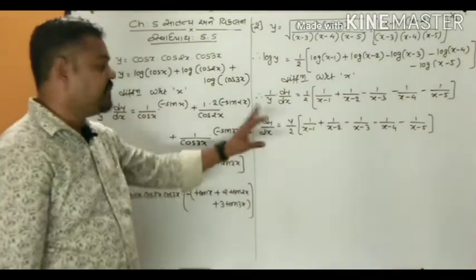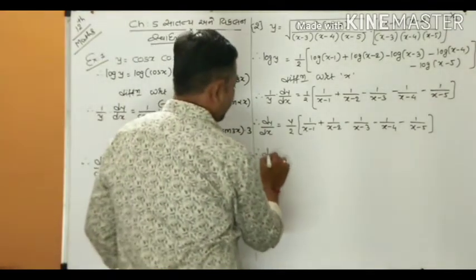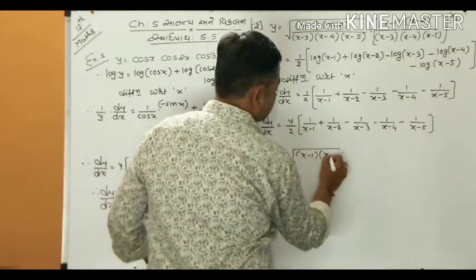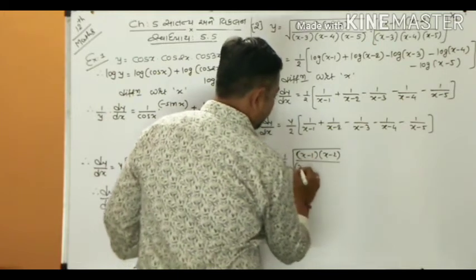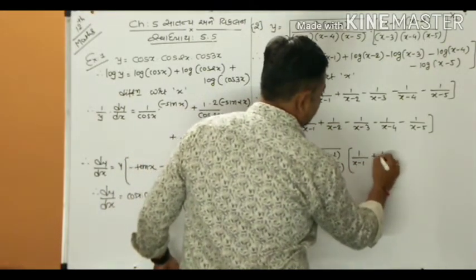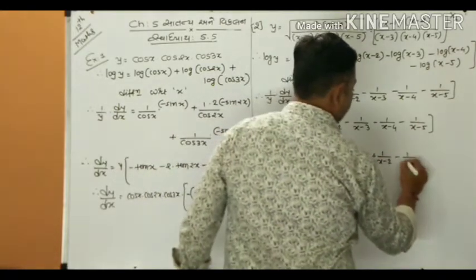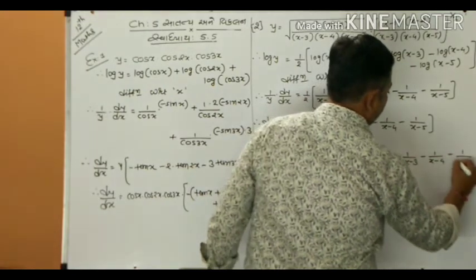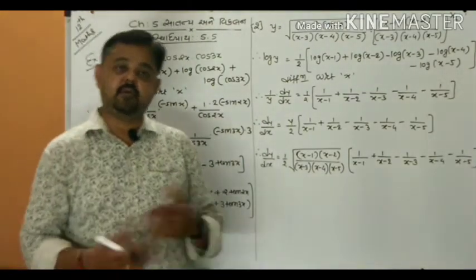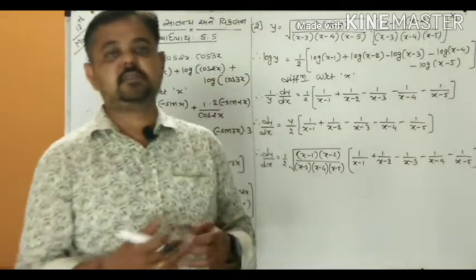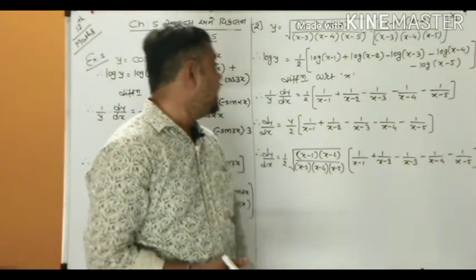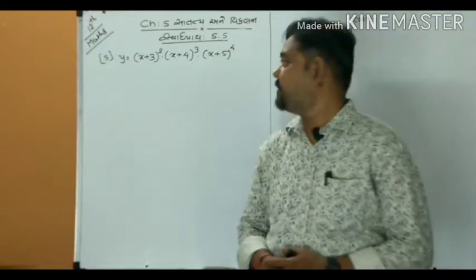This is the answer; otherwise we can substitute the value of y. So dy/dx = (1/2)·√[(x−1)(x−2)/((x−3)(x−4)(x−5))] · [1/(x−1) + 1/(x−2) − 1/(x−3) − 1/(x−4) − 1/(x−5)]. For functions in division form or powers like x raised to x, x raised to y, we generally solve by applying log. Example 2 is complete.